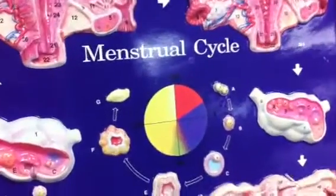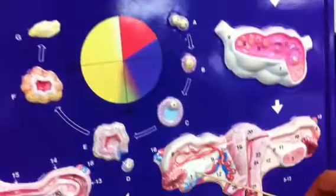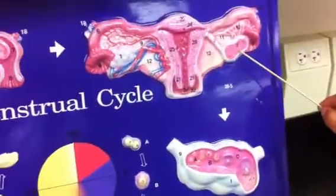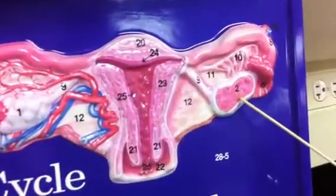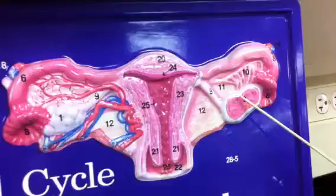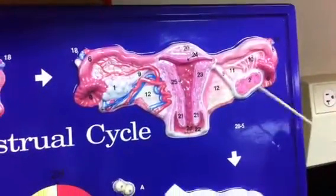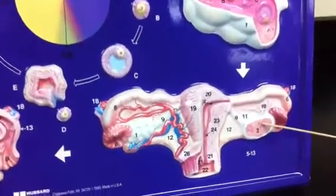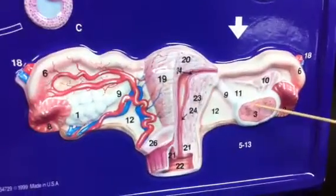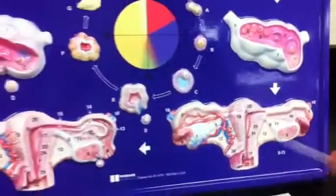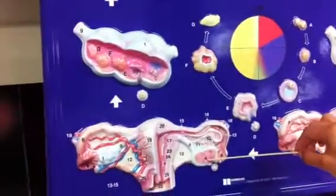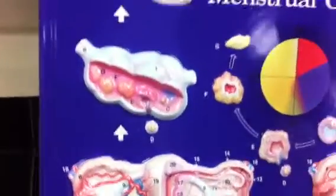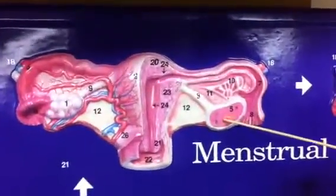Number one is the ovary. Number two is the corpus albicans, inside the ovary during the menstruation period at day 28. Number three is the Graafian follicle, inside the ovary during the proliferative phase. Number four is ovulation, as the oocyte is being ovulated. Number five is the corpus luteum inside the ovary during the secretory phase.